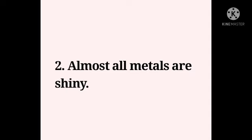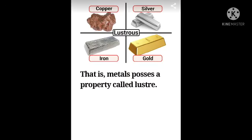The second physical property of metals is that all metals are shiny, and this quality is known as lustre. Metals possess a property called lustre, just like copper, silver, iron, and gold.